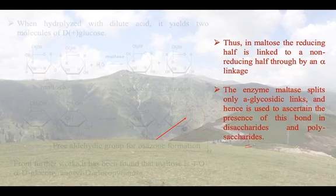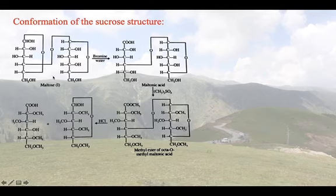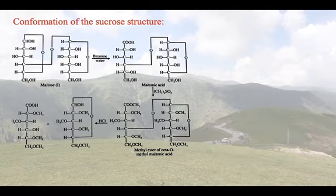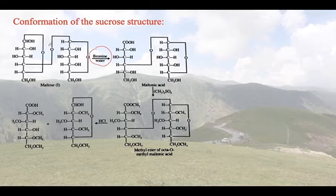Now, how has this structure been confirmed? We have many methods. Based on properties such as whether it is reducing or non-reducing, whether it forms an osazone, whether it shows mutarotation — these chemical reactions give us an approximate structure. To find the final structure, we use a reaction sequence. First, we use bromine water to oxidize the free anomeric carbon.